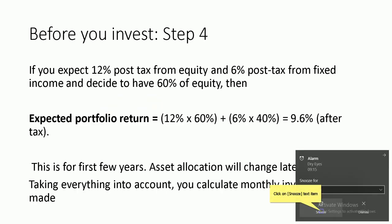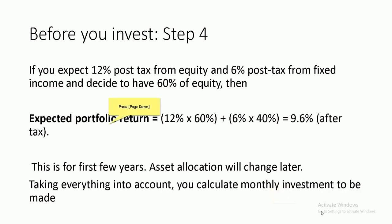Let's say I expect 12% post-tax from equity — I'm a slightly aggressive investor — and 6% post-tax return from fixed income, and I decide to have 60% equity in my portfolio. The expected portfolio return would be 12% × 60% plus 6% × 40% — that's a weighted sum — which comes to about 9.6% after tax. This is for the first year or the first few years; asset allocation will change later. As the equity allocation comes down, the expected portfolio return will also typically come down, and you need to take that into account and calculate the monthly investment to be made for every year of investing.